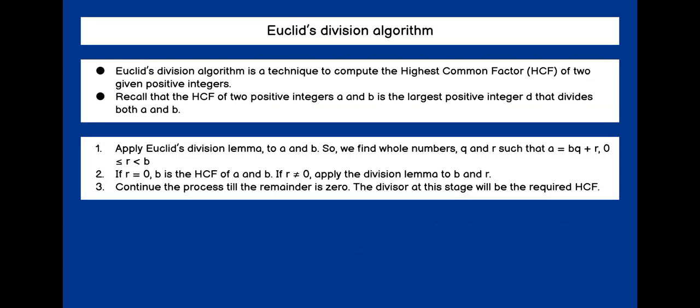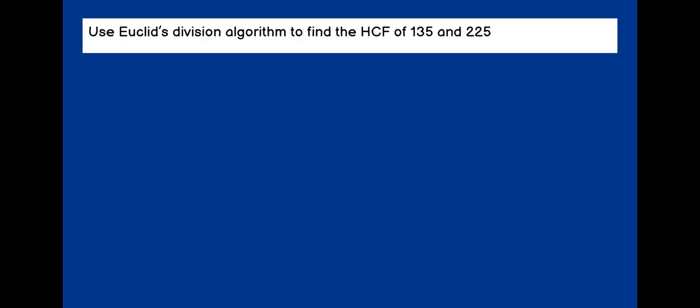Coming to Euclid's division algorithm. We just saw Euclid's division lemma, which was A equals BQ plus R. Now we will go to algorithm, that is, computing the HCF of 2 given positive integers. Let's try to solve a question. Find the HCF of 135 and 225. 225 is bigger than 135. So therefore I will take the dividend as 225. I will do successive division.